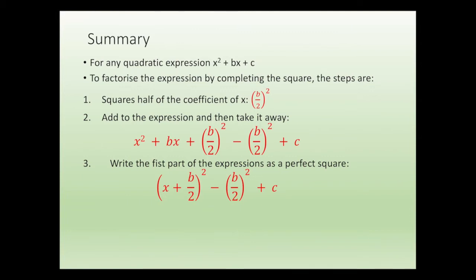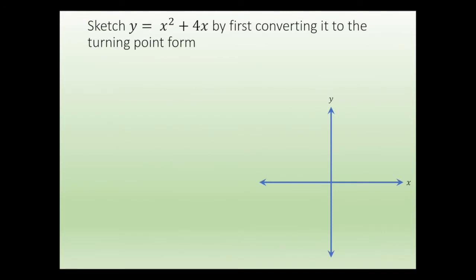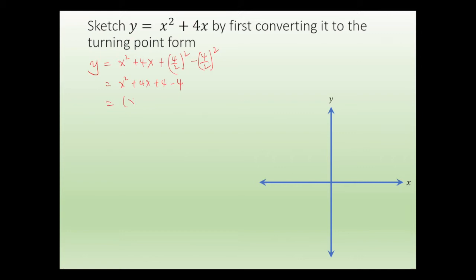Let's look at the previous example again. To convert y equals x squared plus 4x into the turning point form, I need to complete the square. Here, c is 0. So we write this as x squared plus 4x plus (4 over 2) squared minus (4 over 2) squared. That gives x squared plus 4x plus 4 minus 4, which is (x plus 2) squared minus 4. Straight away, you know the turning point is (minus 2, minus 4) and the axis of symmetry is x equals minus 2.